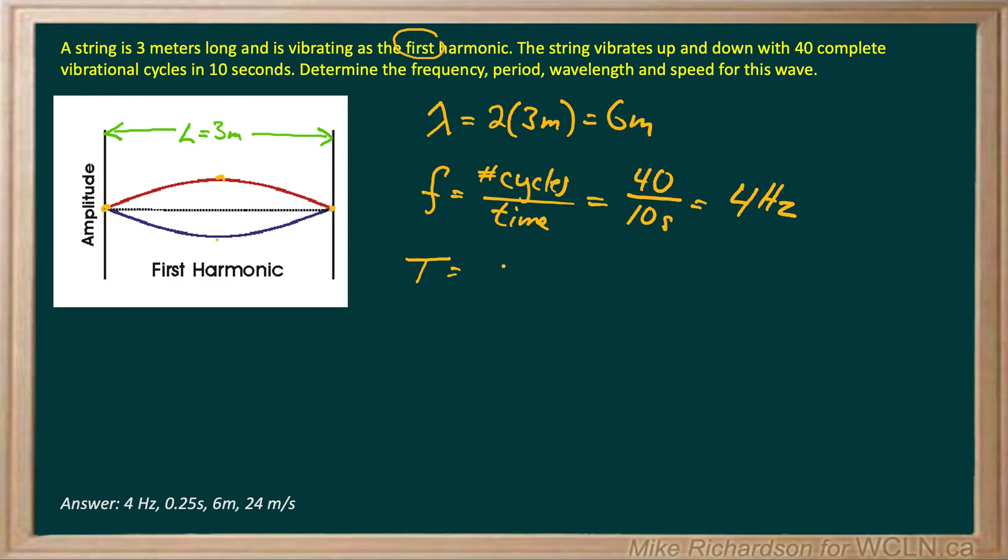Now period and frequency are inversely related. So the time it takes to make one full wave. 4 Hertz means it's making four waves in one second. So it stands to reason it would take one quarter of a second to make one wave. It's a simple relationship. I just go 1 over 4 Hertz and that ends up giving me a period of 0.25 seconds.